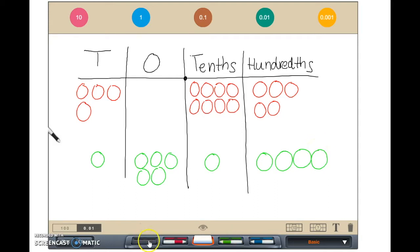One, two, three, four, five, six, seven, eight, nine. Nine circles in the hundredths place.